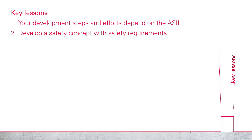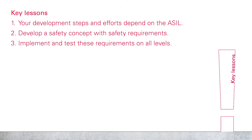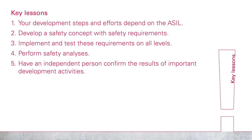Second, develop a safety concept with safety requirements for your scope of responsibility. Such concepts and requirements describe how to detect faults and how to mitigate them. Third key lesson: implement and test these requirements on all levels. Each involved company must contribute here depending on their responsibility — be it on a vehicle, system, hardware, or software level. Fourth, perform safety analysis to understand the causes and effects of faults. Number five: have an independent person confirm the results of important development activities.